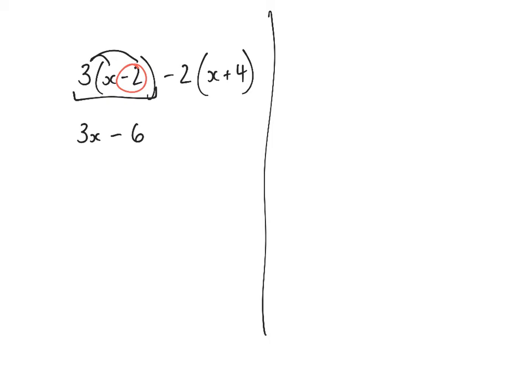Now it's this bit that's different. We're going to expand this bracket. The number in front of this bracket is negative 2. You must include that negative. So we've got negative 2 times x, which is negative 2x. And we've got negative 2 multiplied by 4, which is negative 8.